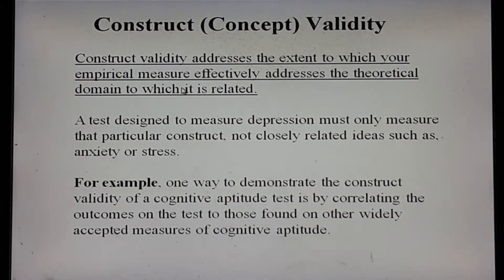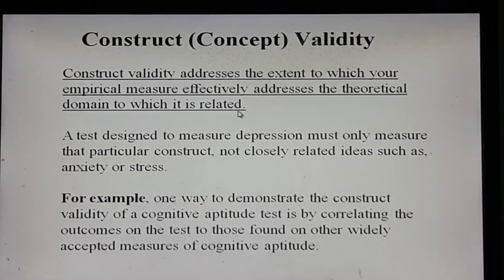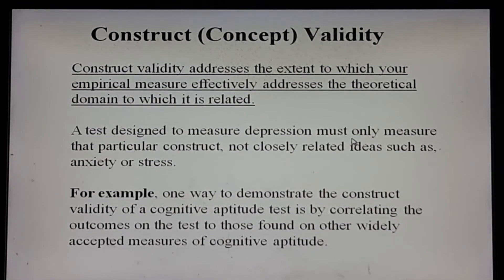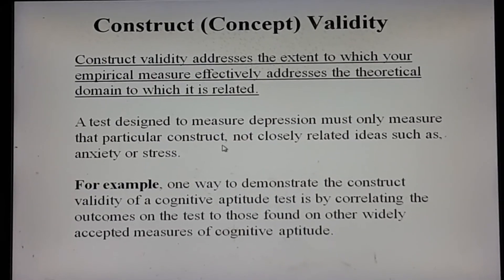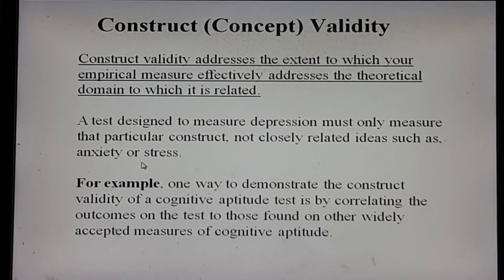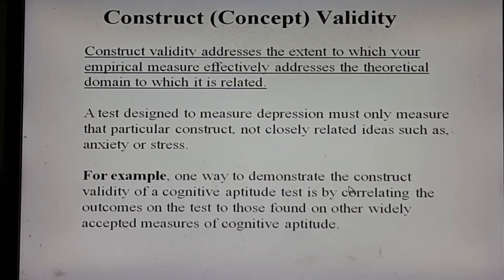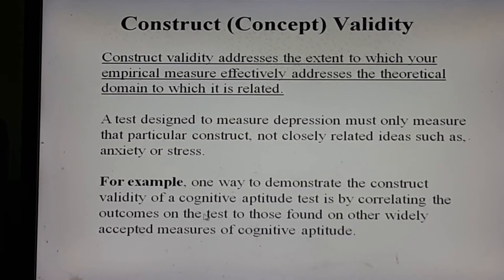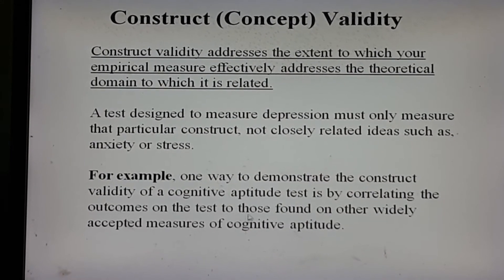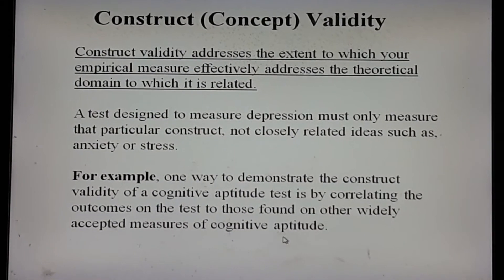Construct validity addresses the extent to which your empirical measure effectively addresses the theoretical domain to which it is related. A test designed to measure depression must only measure that particular construct, not closely related ideas such as anxiety or stress. For example, one way to demonstrate the construct validity of a cognitive aptitude test is by correlating the outcomes on the test to those found on other widely accepted measures of cognitive aptitude.